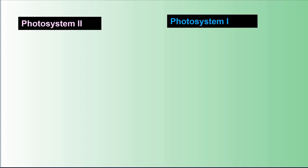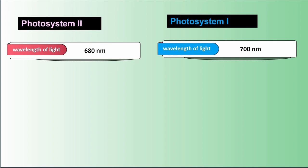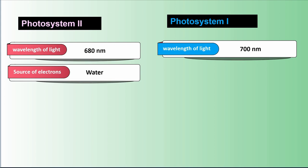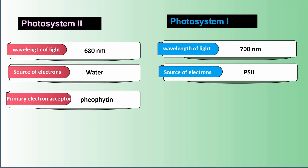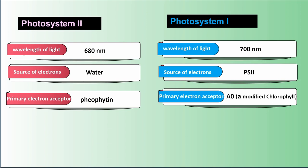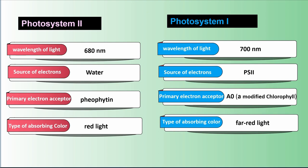Comparing Photosystem II and Photosystem I: Photosystem II absorbs light at 680 nanometers, but Photosystem I absorbs light at 700 nanometers. The source of electrons for Photosystem II is water, but for Photosystem I it is PS2. The primary electron acceptor of Photosystem II is pheophytin, but for Photosystem I it is a modified chlorophyll. Photosystem II absorbs red light, while Photosystem I absorbs far-red light.